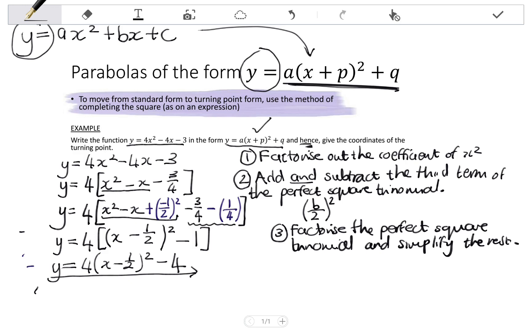But then it says, and hence, give the coordinates of the turning point. So, my turning point coordinates, I can easily read from the turning point form of a parabola. So, my y coordinate is exactly the q value, which is negative 4. My x coordinate, I find by taking what I have in brackets, that's the x minus a half, make it equal to 0, and then solve for x. That gives me x equals a half. So my x coordinate of the turning point is a half, and that is my turning point.